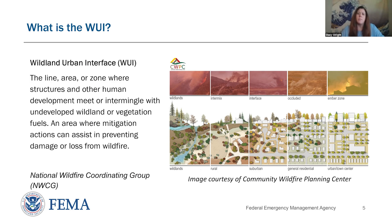One important concept for this series is understanding the wildland-urban interface, or WUI. The WUI is the line, area, or zone where structures and other human development meet or intermingle with undeveloped wildland or vegetation fuels. This graphic illustrates the range of WUI conditions and associated terminology, where wildlands and the built environment intermingle.